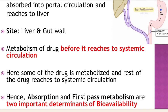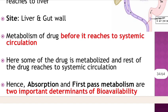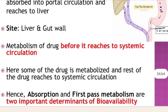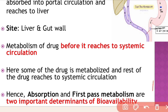Absorption of a drug and first pass metabolism of a drug are the two important determinants of bioavailability. How the drug is absorbed, what is the extent of absorption, and first pass metabolism — these are the two important determinants of bioavailability.